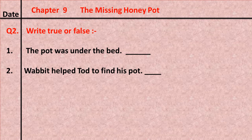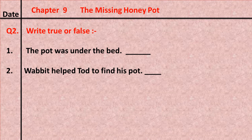Question number two: Write true or false. Number one: The pot was under the bed. Is it true or false? It is false — the pot was not under the bed. Number two: Wobbit helped Todd to find his pot. The sentence is true — yes, Wobbit helped Todd to find his pot, so number two is true.